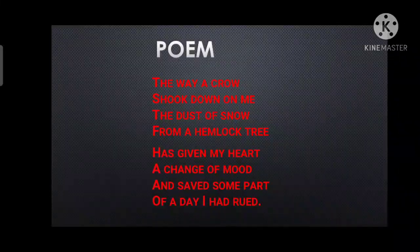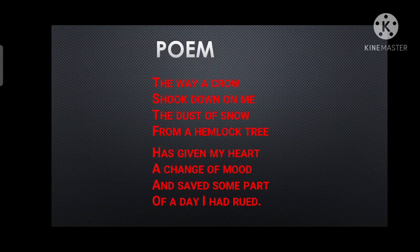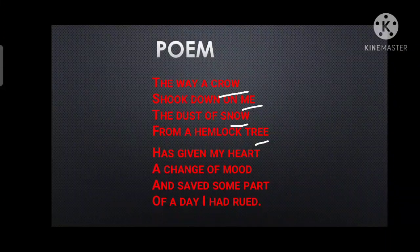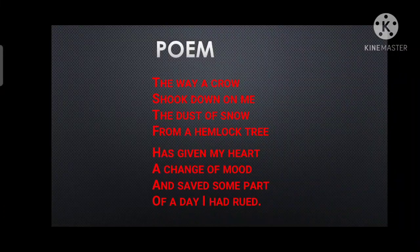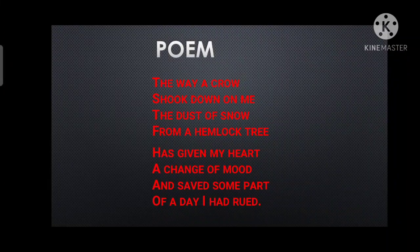First of all, you will learn what is the rhyming scheme for this poem. The first line ends with 'crow' — just note it. The second line ends with 'me.' 'Crow' and 'me' have different sounds, so here you put 'a' for crow and 'b' for me. Now for the third line ending with 'snow' — crow and snow have matching sounds, so you write 'a' again.